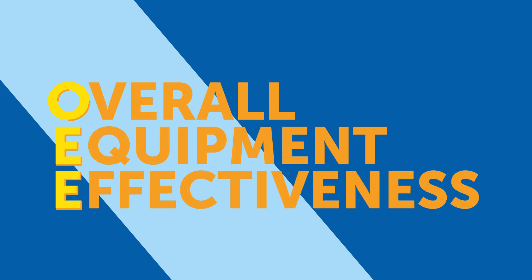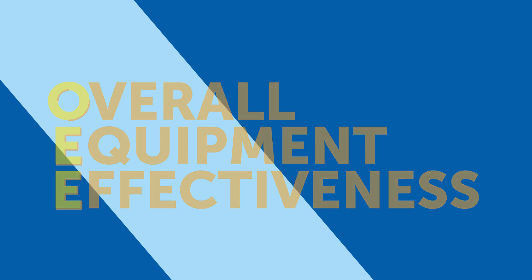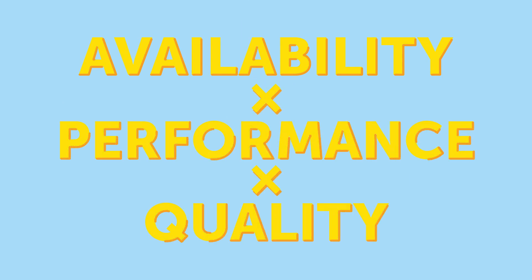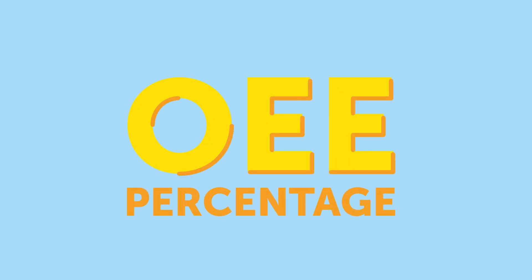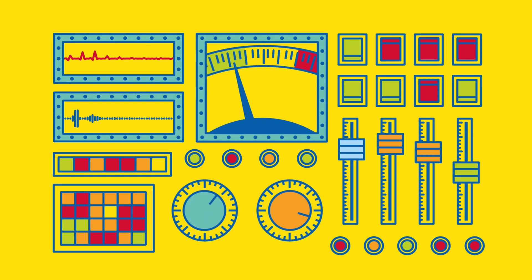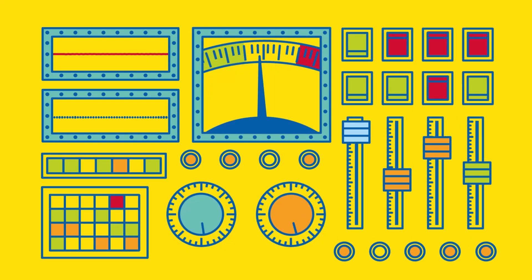OEE stands for Overall Equipment Effectiveness. And although it may sound like rocket science, it's just a simple calculation: OEE equals Availability times Performance times Quality. This calculation results in an OEE percentage. Once you know the results of your OEE calculation, you have a much better understanding of how effective your production process is. Then you can take the necessary steps to improve your OEE score. Monitoring this metric over time lets you ensure continuous improvement in operational excellence.